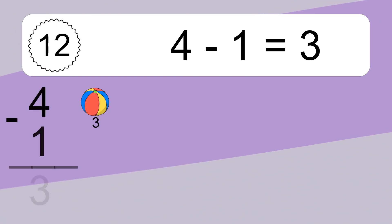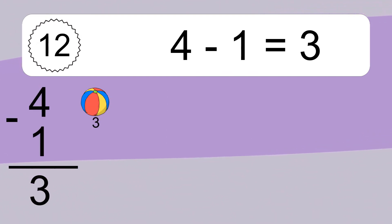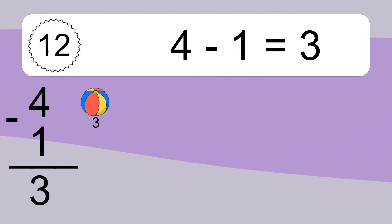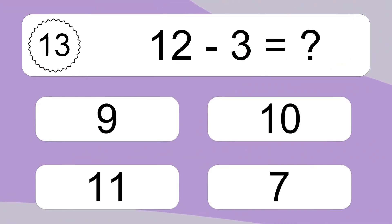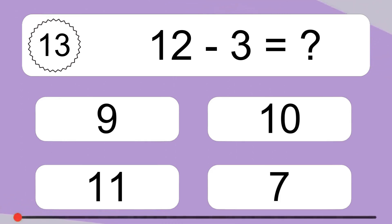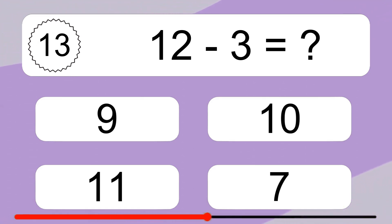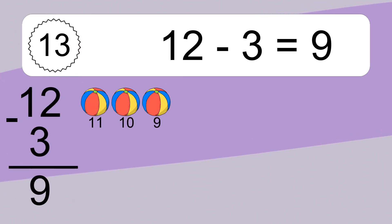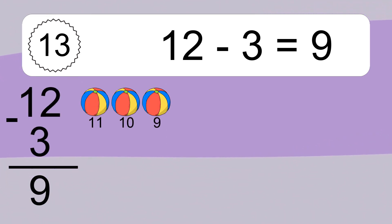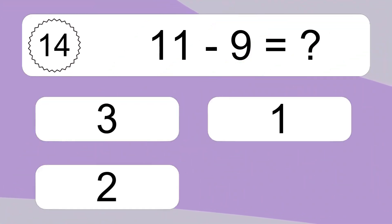4 minus 1 equals what? 4 minus 1 equals 3. Let's count it. 3. 12 minus 3 equals what? 12 minus 3 equals 9. Let's count it. 11, 10, 9.